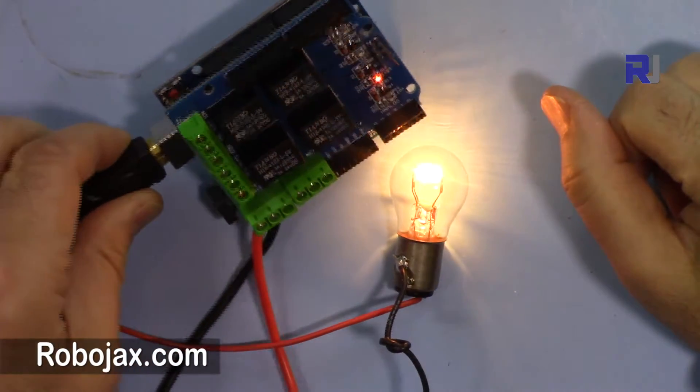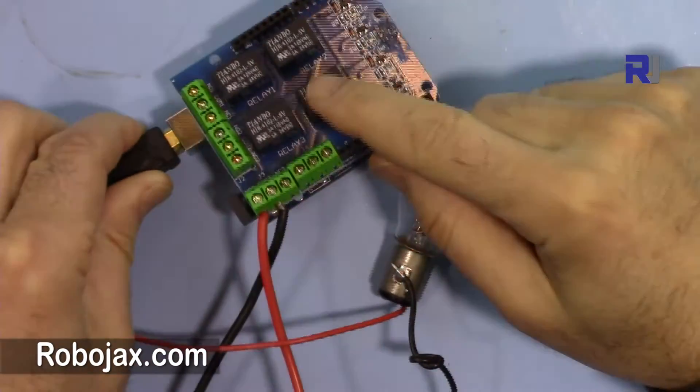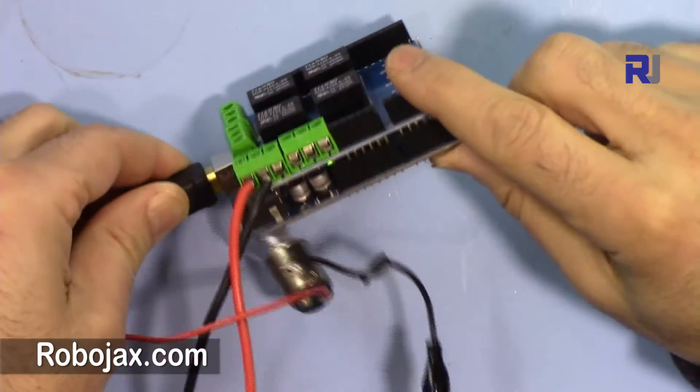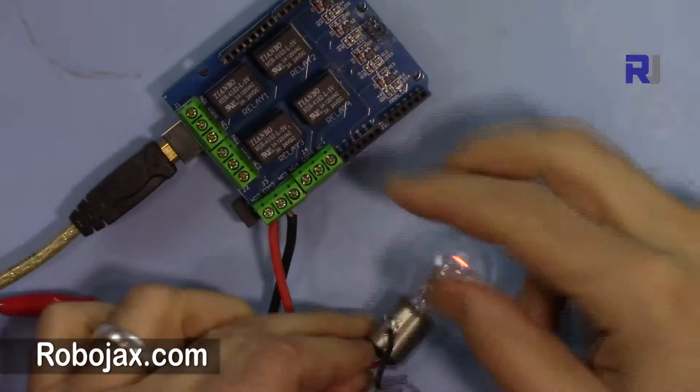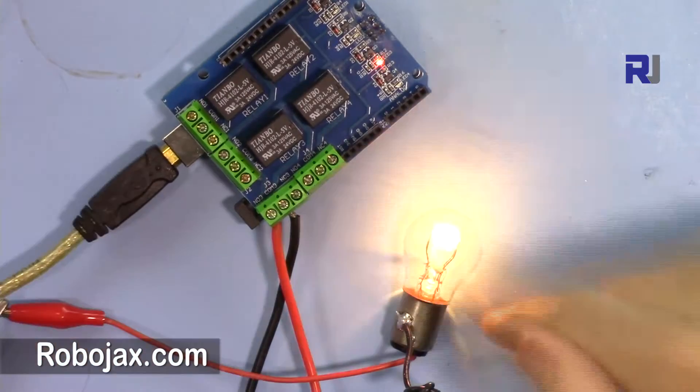Hi, welcome to Robojax. In this video I'm going to show you how you can use this Arduino relay shield to control or turn on and off lights or another DC load like this.